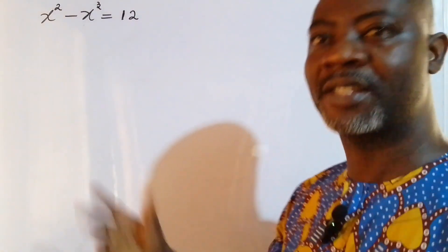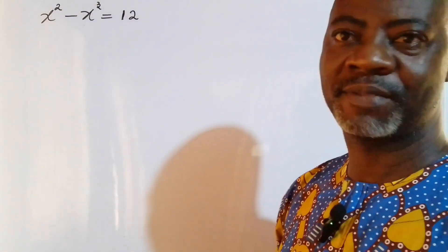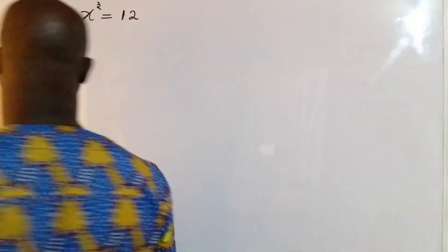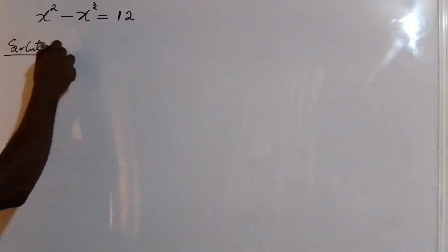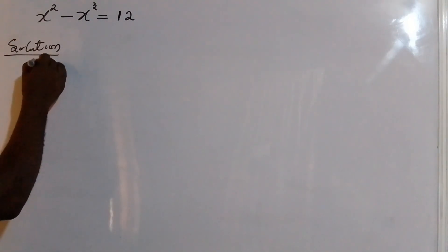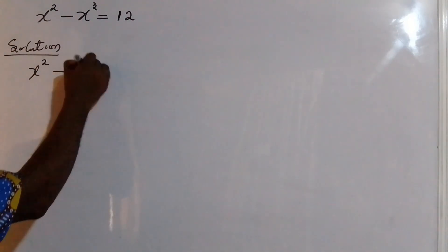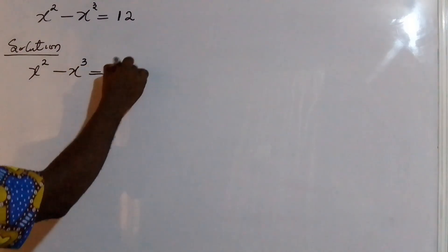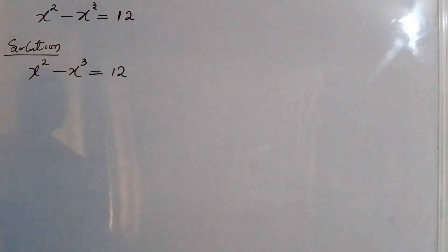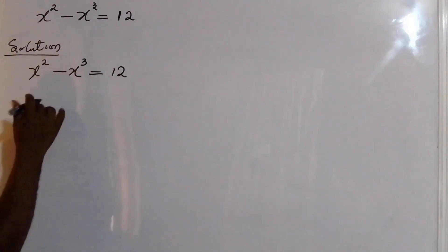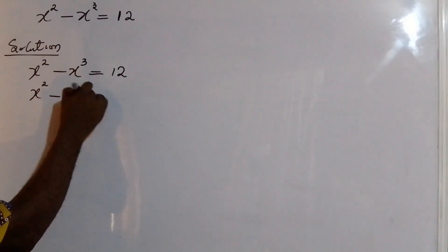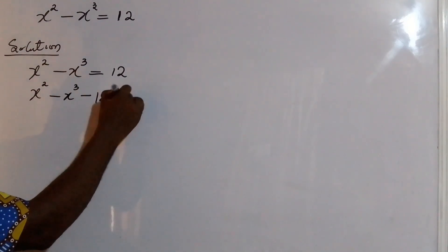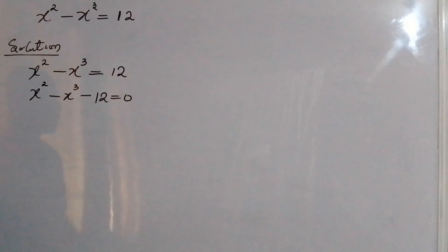Now, let's get back to the question and see how we tackle this. The equation is x² minus x³ equals 12. I'm going to transfer this 12 to the left-hand side, so I have x² minus x³ minus 12 equals 0.